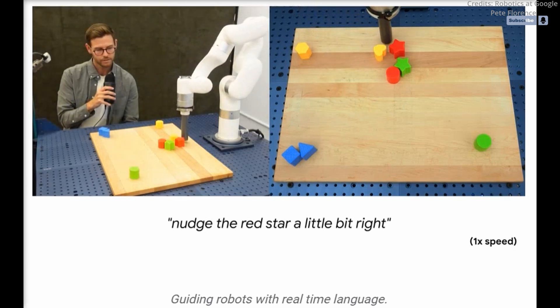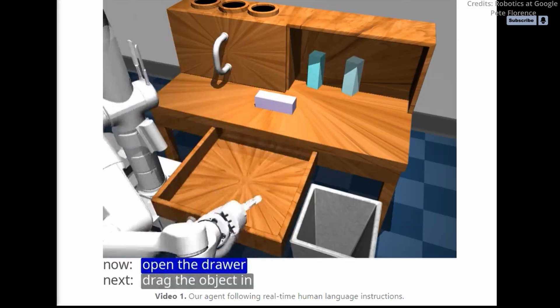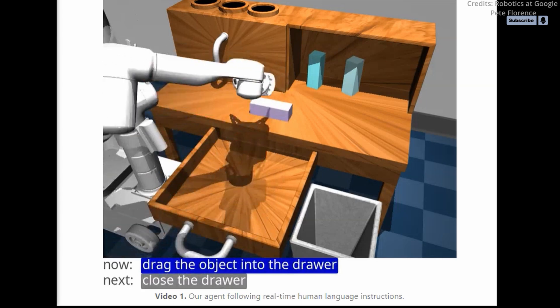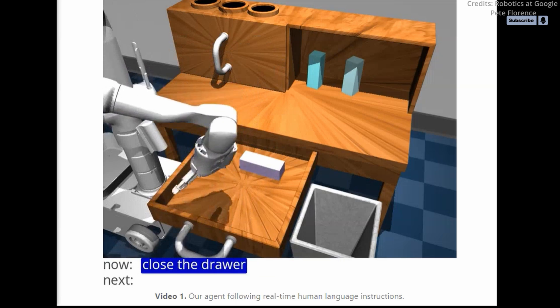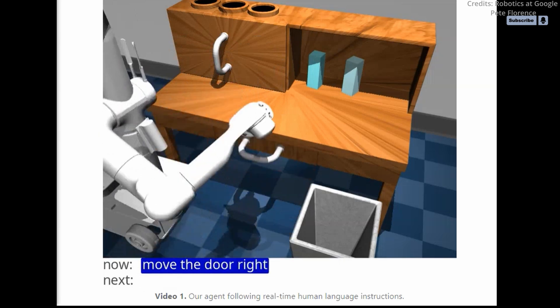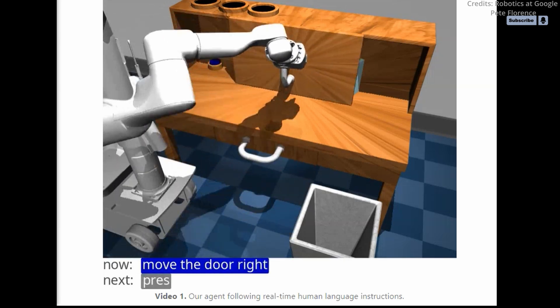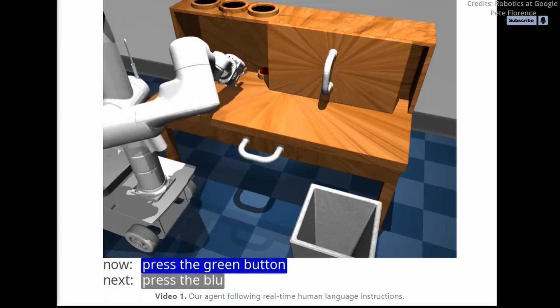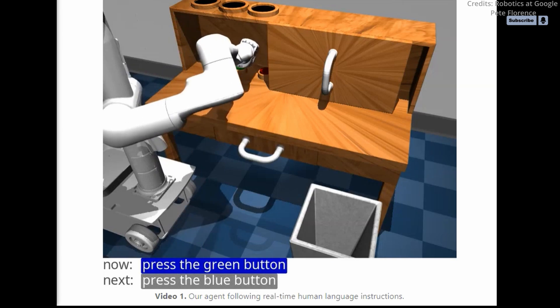However, an important limitation of current language and action robot learning systems is their lack of real-time interaction with humans. In the future, it would be ideal for robots to be able to react in real-time to any task that a user describes in natural language. This would be particularly important in open human environments where users might need to customize robot behavior on the fly.